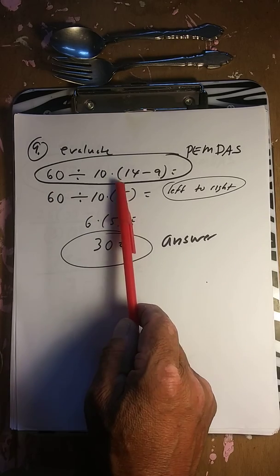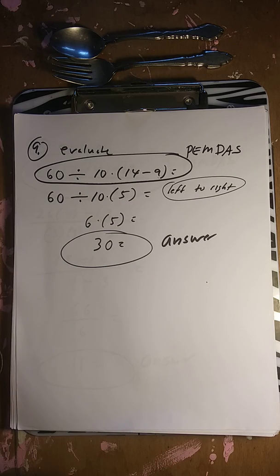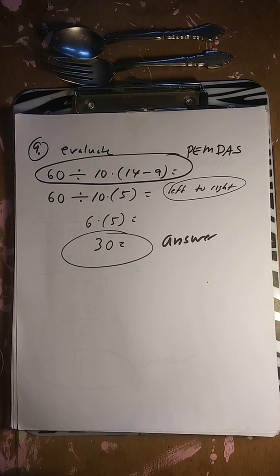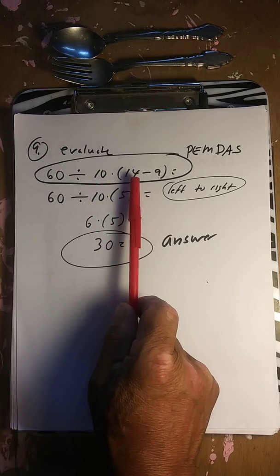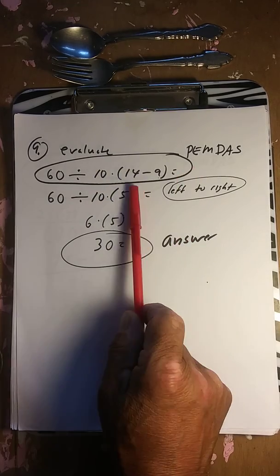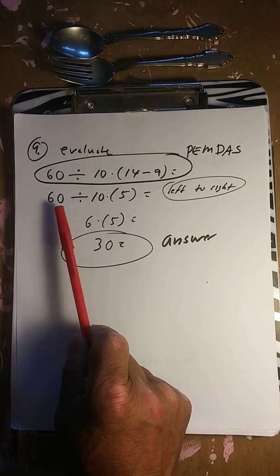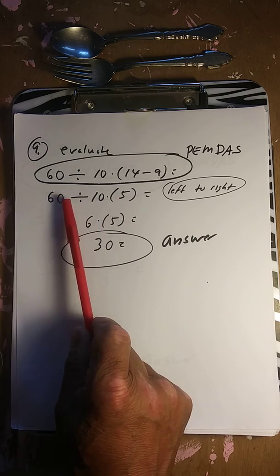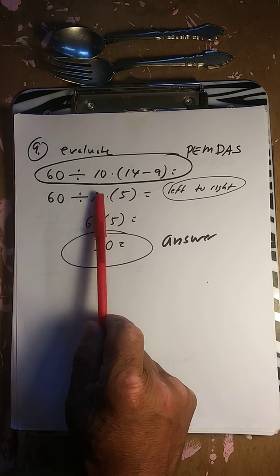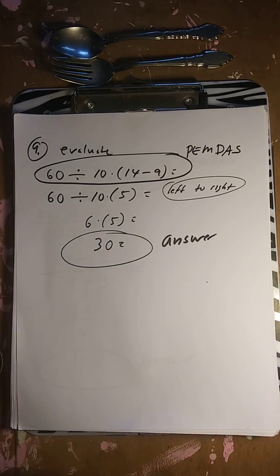Next: 60 divided by 10 times (14 minus 9). We have parentheses, so do that first: 14 minus 9 is 5. Now left to right — division first: 60 divided by 10 is 6. Then 6 times 5 is 30.